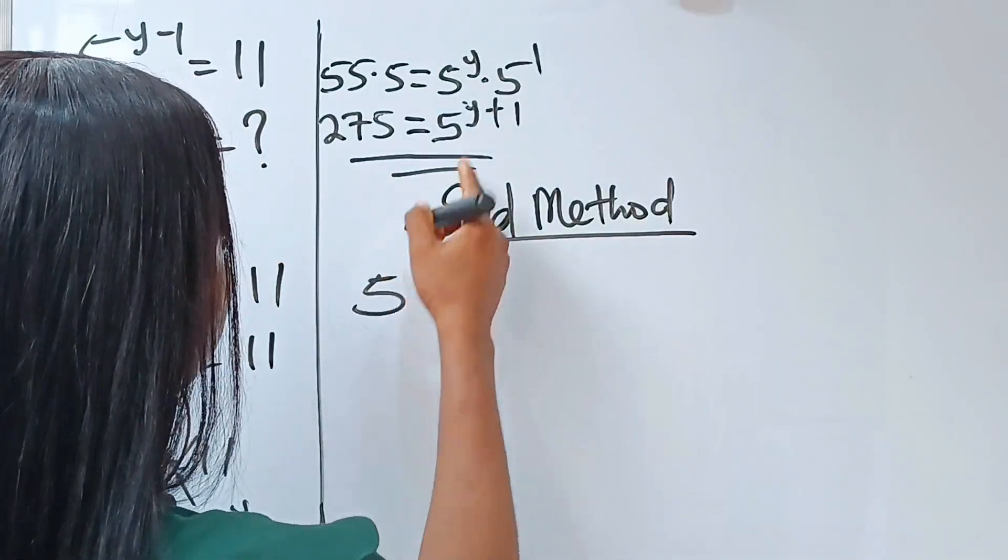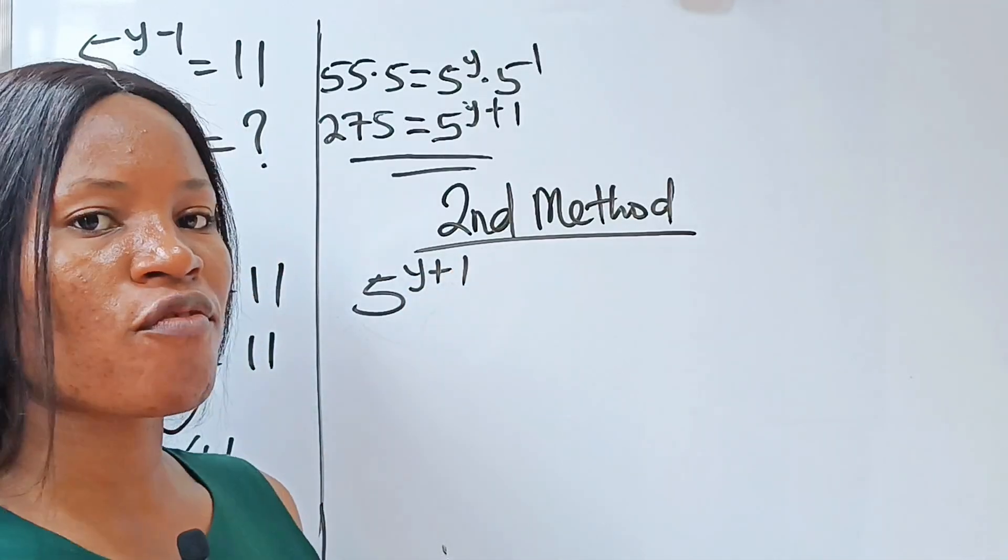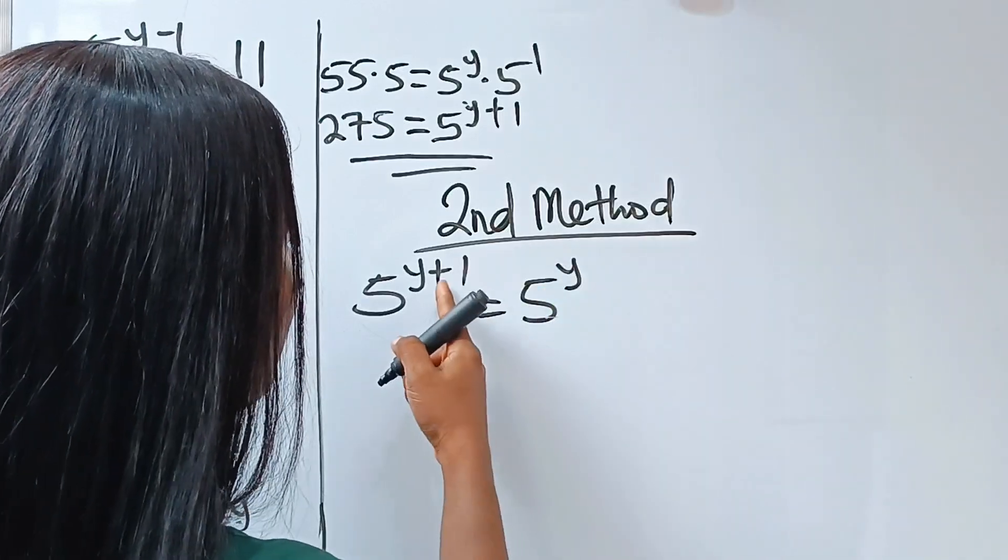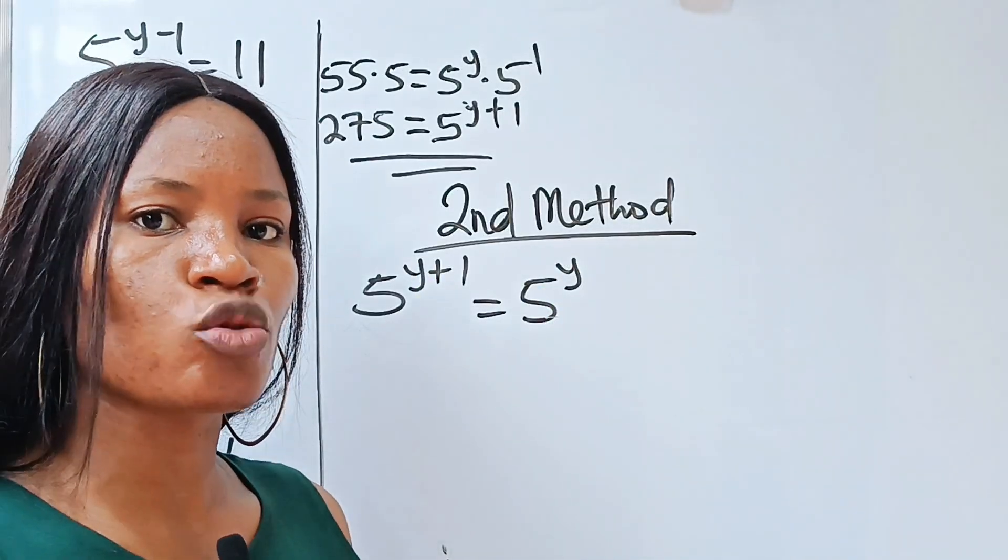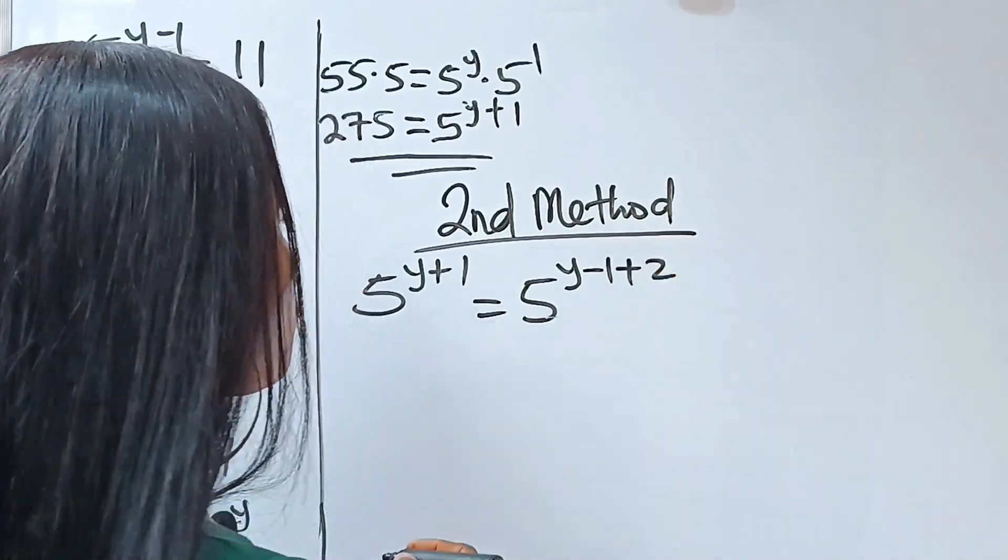We are asked to solve for 5 to the power of y plus 1. Now, 5 to the power of y plus 1 can be written as 5 raised to the power of y. Now, 1 is the same thing as 2 minus 1. So that is minus 1 plus 2.